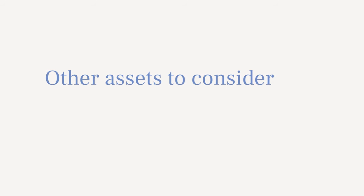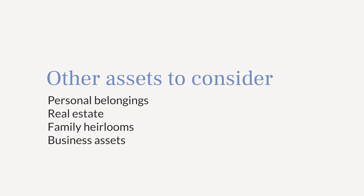Step three: make a list of your assets. It's time to create an inventory of your assets so that you can then designate how you want them passed down. This might be tricky because assets can accumulate in a variety of ways throughout your life. When we think of the word asset, things like cash, savings, and investment accounts come to mind. While these are all great examples, you also need to remember things like your personal belongings, real estate, family heirlooms, and business assets. It might help to conduct a thorough audit of anything and everything you own.